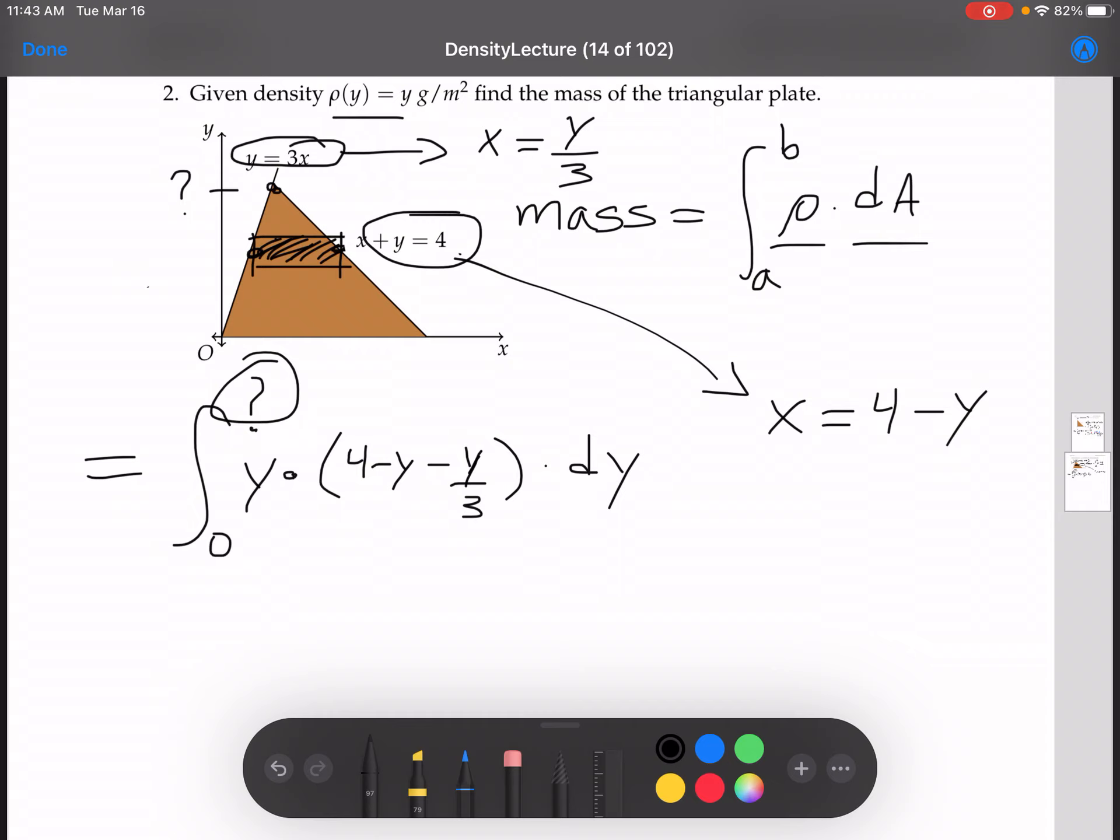Now let's find where to stop. To find where to stop, there are many ways you could go about this. Now that we already have these two functions in terms of y, we could set x equal to each other. In other words, we're asking where do these two lines cross? So we can solve for that by setting y over 3 equal to 4 minus y and solving.